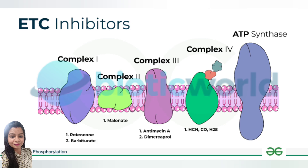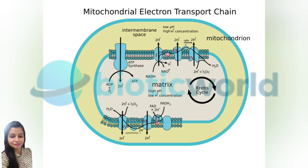Before the electron transport chain, we go through a few important steps in cellular respiration. First, in glycolysis, glucose is broken down into pyruvate in the cytoplasm, producing 2 NADH and a small amount of ATP. Then, in the link reaction, pyruvate is converted into acetyl coenzyme A, which enters the citric acid cycle in the mitochondria. This cycle generates more NADH and FADH2, which are crucial for fueling the ETC.